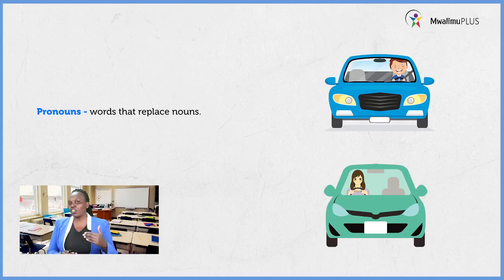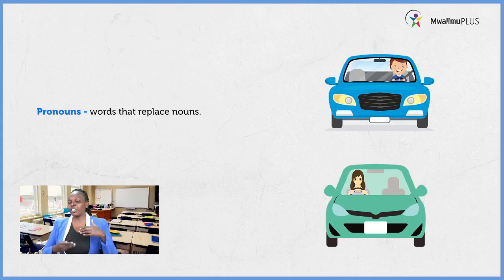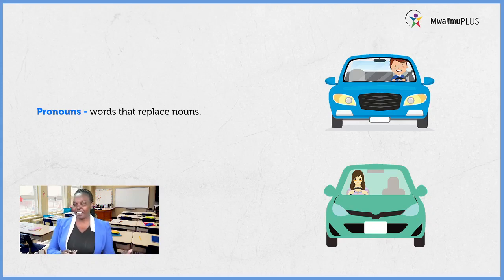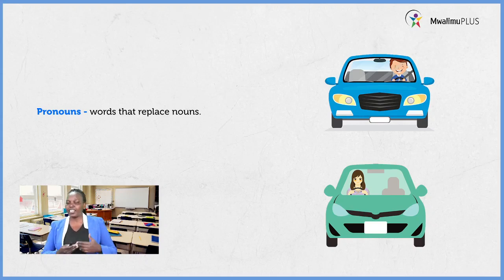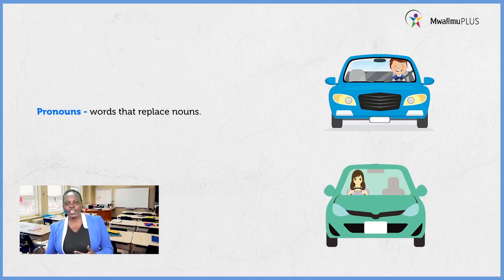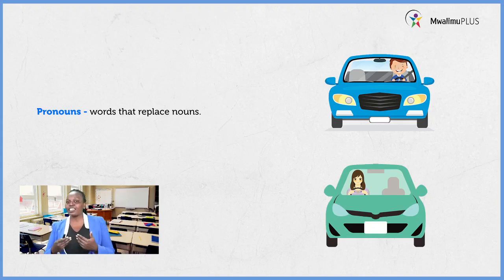If John is driving a car, we can reconstruct the sentence using a pronoun instead of the noun John. Which pronoun can we use to replace John? He. He is driving a car. So we have personal pronouns — these are pronouns that replace names of things or names of people. We have he, she, and it in singular. Then we have they and we in plural. We have you, which can be singular or plural.